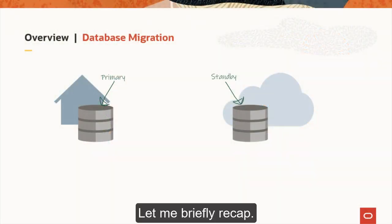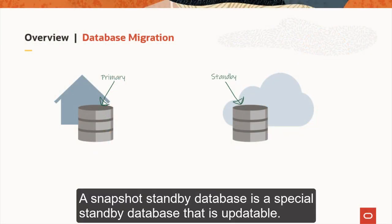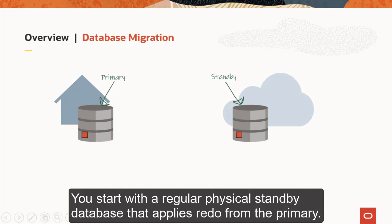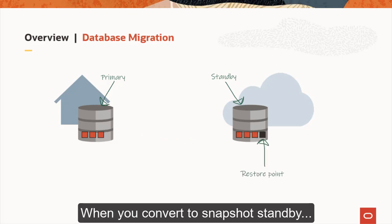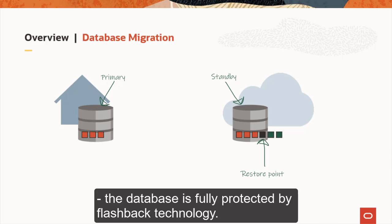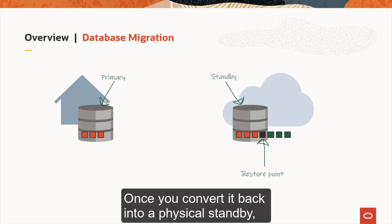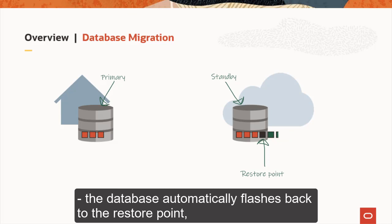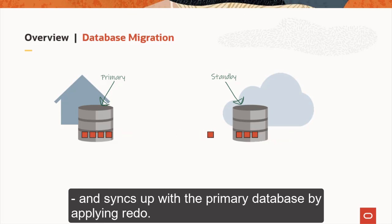Let me briefly recap. A snapshot standby database is a special standby database that is updatable. You start with a regular physical standby database that applies redo from the primary. When you convert to snapshot standby, the database sets a guaranteed restore point and then opens the database in read-write mode. You can then do as many changes as you like. The database is fully protected by flashback technology. Once you convert it back into a physical standby, the database automatically flashes back to the restore point and syncs up with the primary database by applying redo.